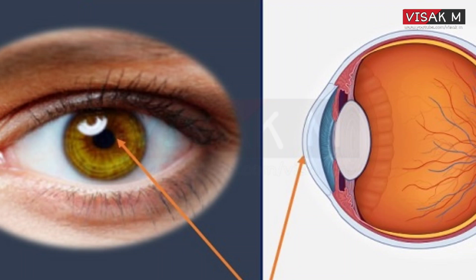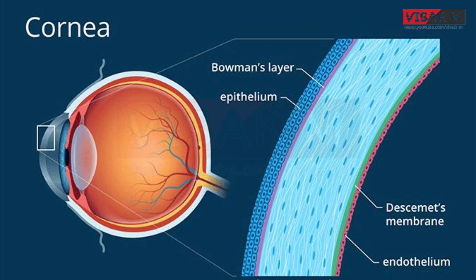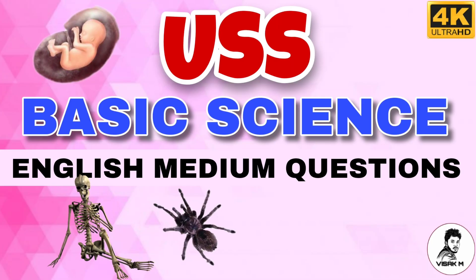The Snellen chart is used to check vision. Then, in eye replacement surgery, which part of the eye should be transplanted? Options: A, Optic nerve; B, Retina; C, Cornea; D, Lens. In eye transplant surgery, the cornea is the part that is transplanted.